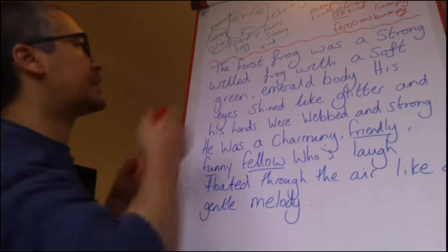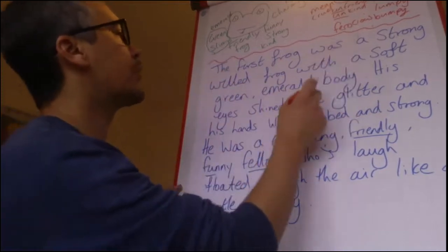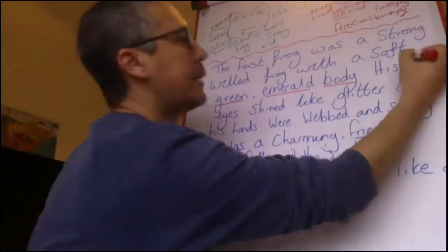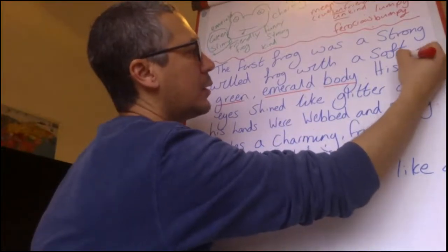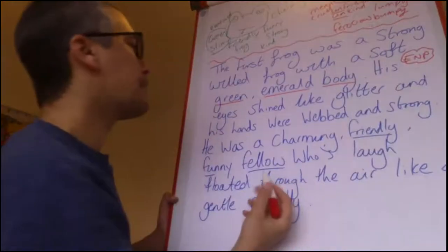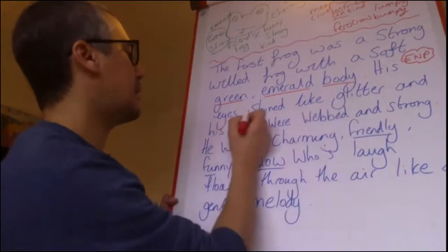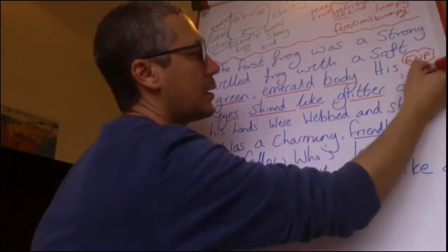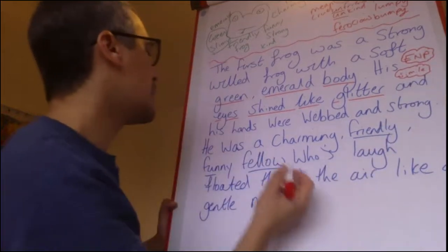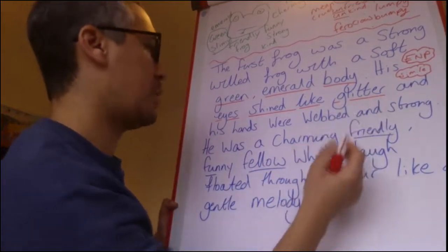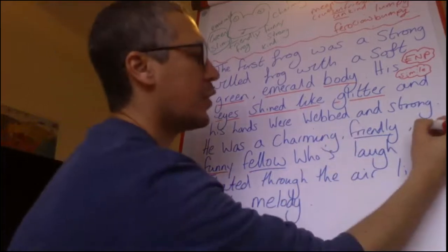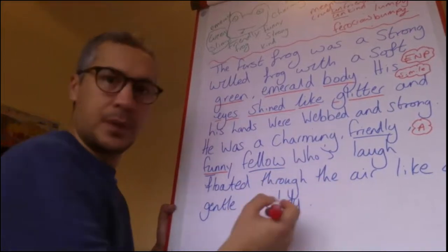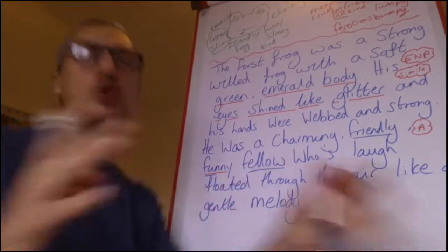So looking back at what I've written — 'soft green emerald body' is an expanded noun phrase. 'His eyes shined like glitter' is a simile because I'm comparing one thing to another. 'Charming, friendly, funny fellow' gives me alliteration. 'Whose laugh floated through the air like a gentle melody' is another simile. That's my first frog done — a few sentences. Now let's do the other frog.